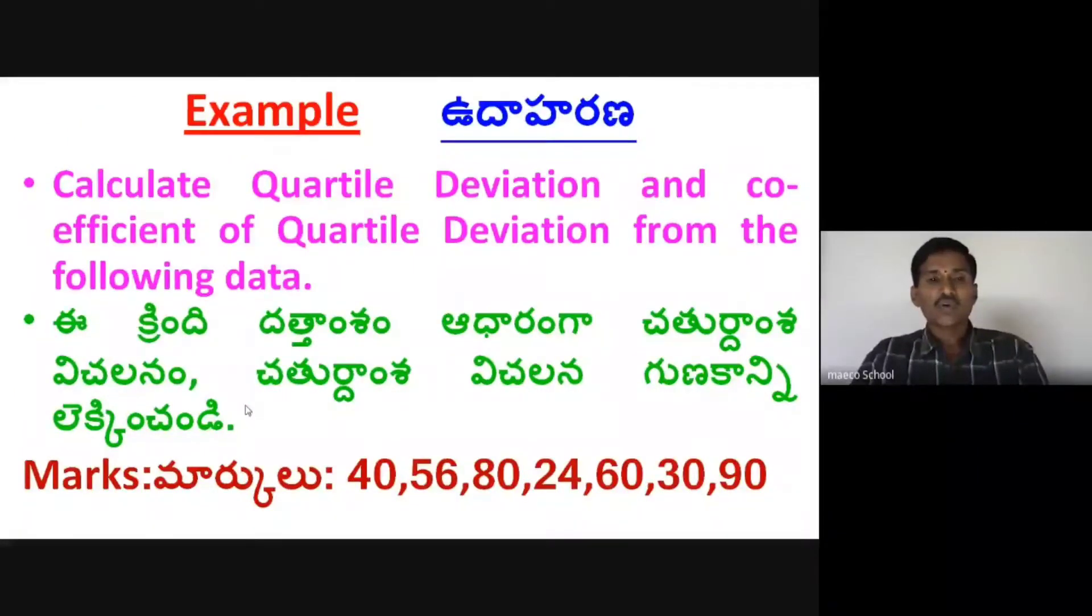Here is an example. Calculate quartile deviation and coefficient of quartile deviation from the following data. This is Individual Series where only the values of variables are given.